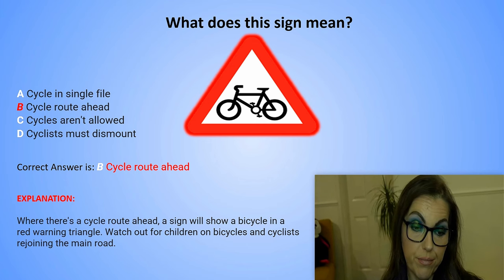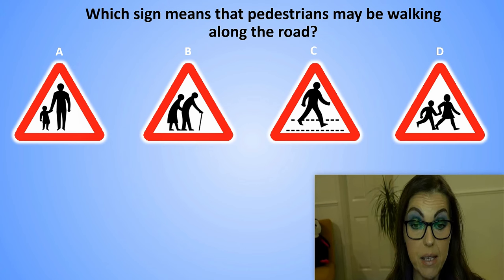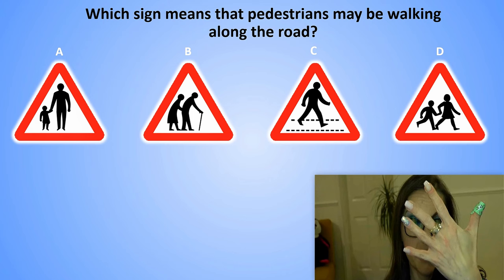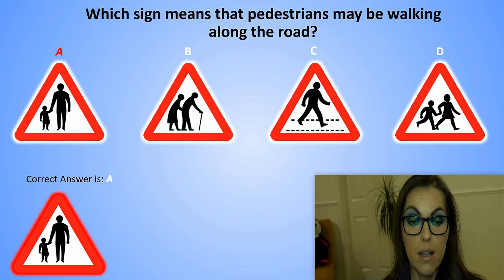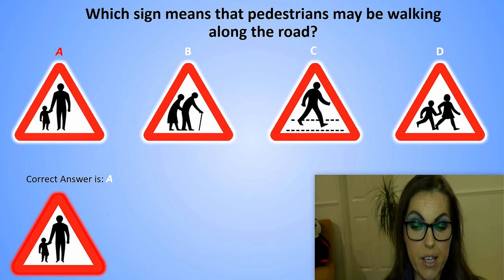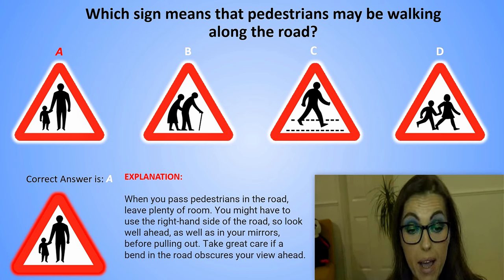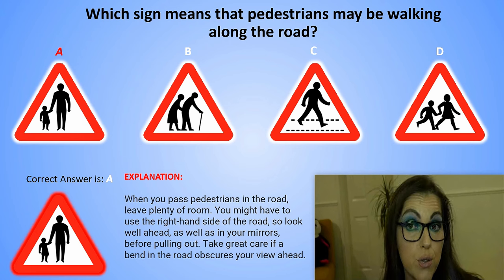Which sign means that pedestrians may be walking along the road? Sign A, Sign B, Sign C, or Sign D? The correct answer is A. Explanation: When you pass pedestrians in the road, leave plenty of room. You might have to use the right-hand side of the road, so look well ahead as well as in your mirrors before pulling out. Take great care if a bend in the road obscures your view ahead.